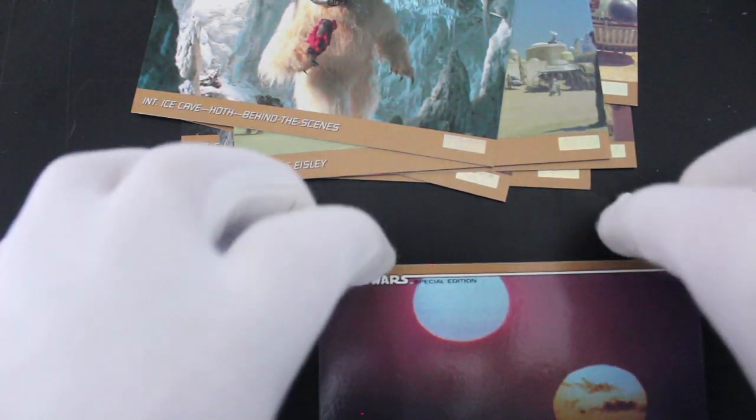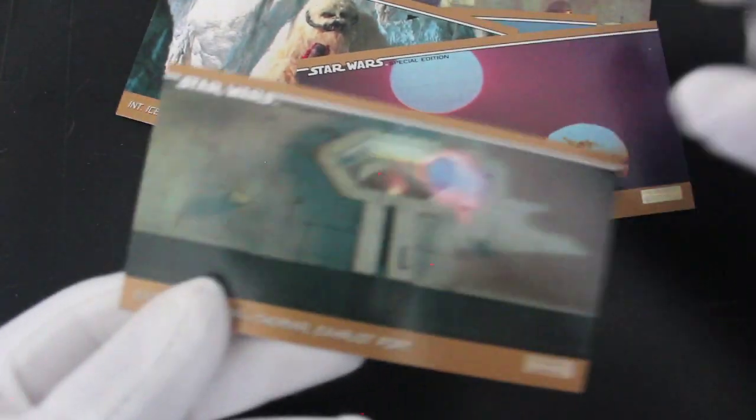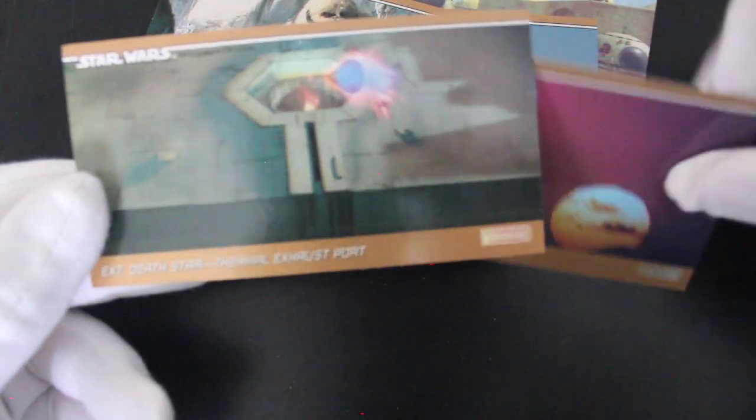And there's a card under here as well. Let's see what we've got. Come on, got it. Now we've got, oh, it's a Death Star port, exhaust port, thermal exhaust port. Let's end with the sunset, though. We didn't get any laser cut cards or anything.